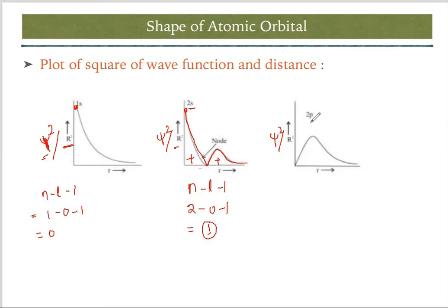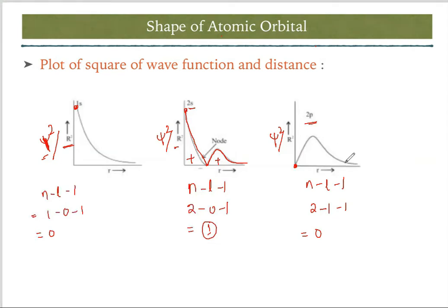For 2p with ψ² on the y-axis, nodes = n − l − 1 = 2 − 1 − 1 = 0. For p, the graph starts from the origin, goes up, and meets at infinity with no nodes — so the graph simply increases to infinity.